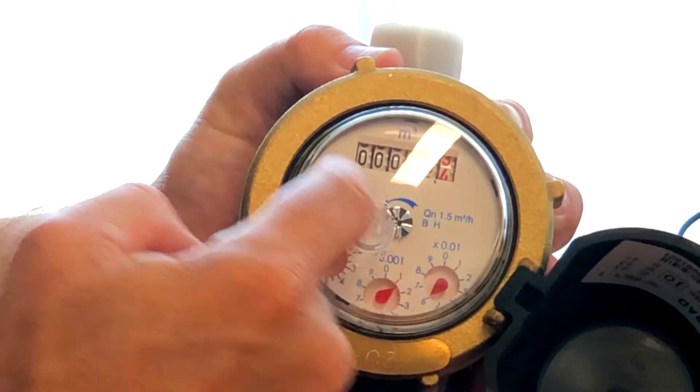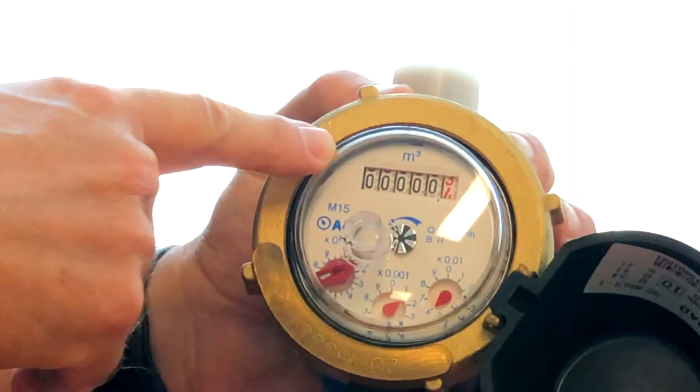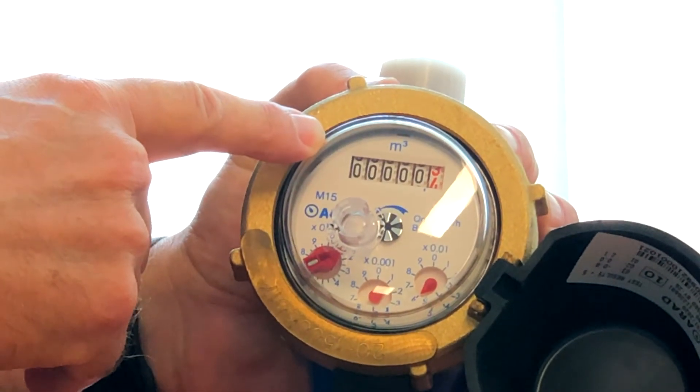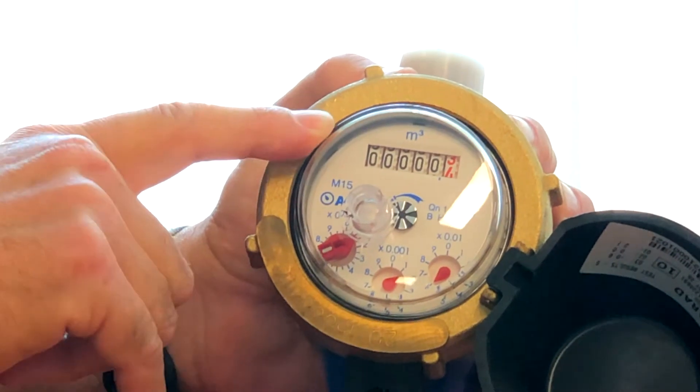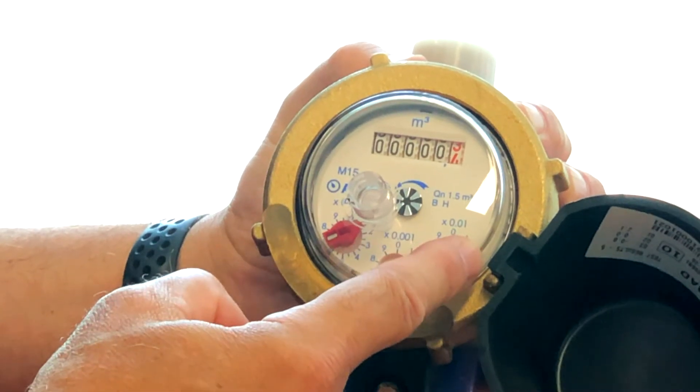Well, firstly, most water meters have an odometer reading which is in cubic meters, which is the same as kiloliters, which is 1,000 liters. And each dial has a range which is also in cubic meters.